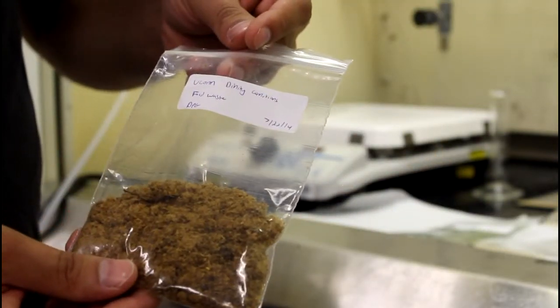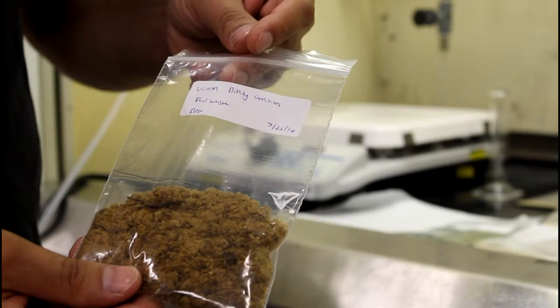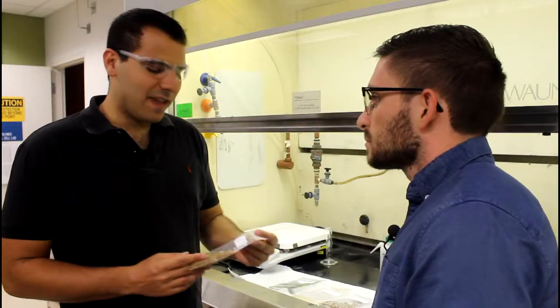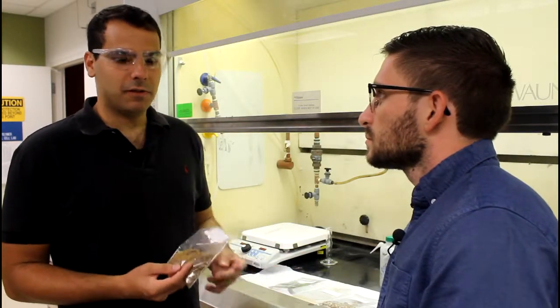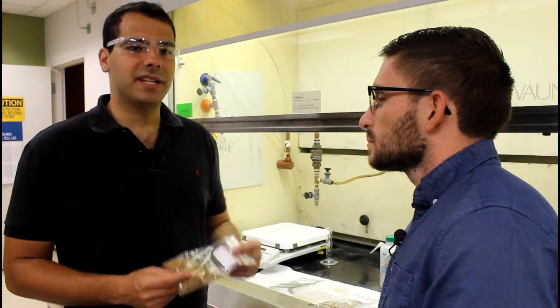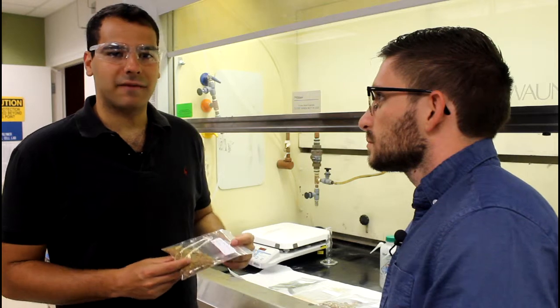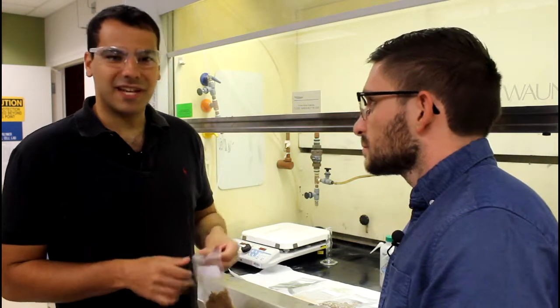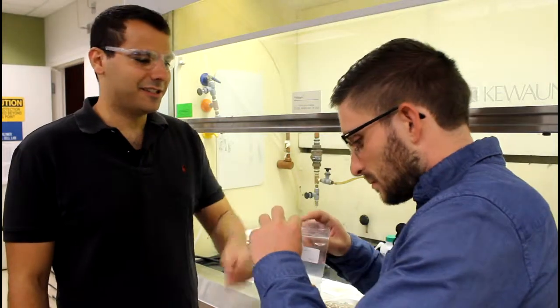So the last one we have here is dining commons waste, produced by the very own students of the University of Connecticut. They sort their foods into compostable and non-compostable items, then it's taken, chopped up and dried, and then we can use it as a feedstock for biomass conversion. It also smells kind of funky too. It smells a little bit like Doritos. Oh yeah, I think I ate those last night.